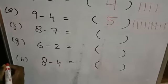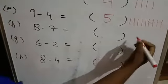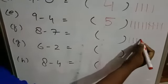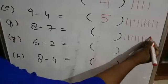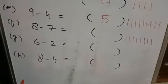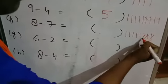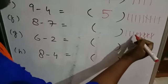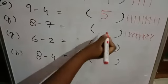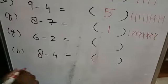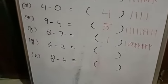Next, F: 8 minus 7. First, you have to draw the lines — 1, 2, 3, 4, 5, 6, 7, 8. And 7 lines you have to cut: 1, 2, 3, 4, 5, 6, 7. How many lines are left? Only 1. So 8 minus 7 equals 1.